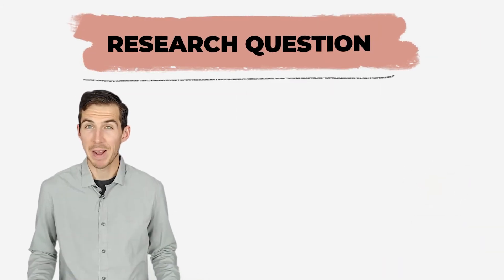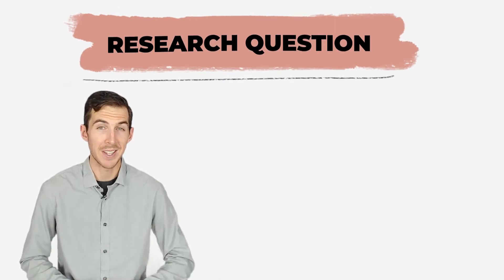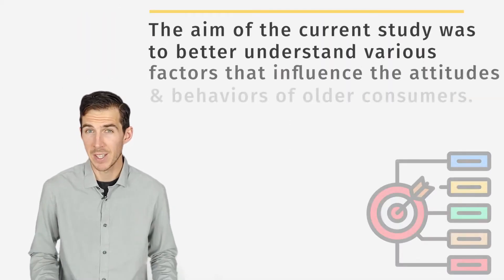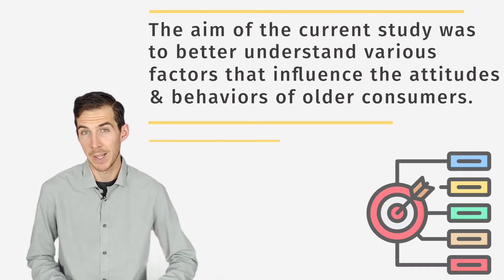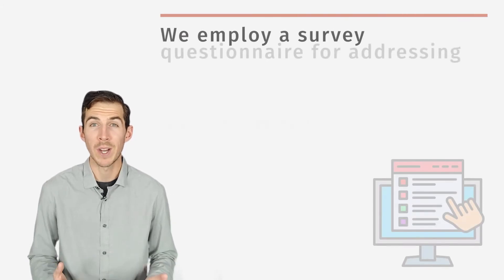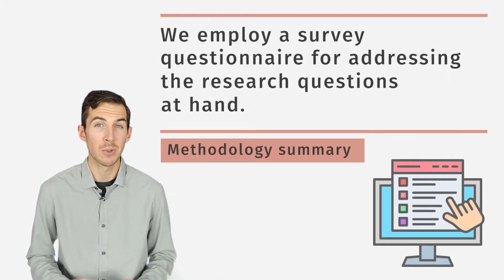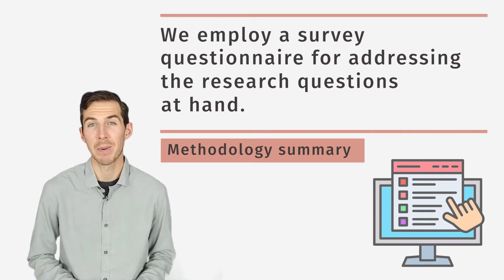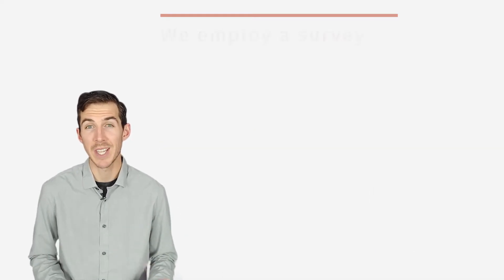Let's talk about research objectives. You have to describe what you intend to accomplish in your research. The aim of the study is to better understand the consumer attitudes and behavior of the older population. We will find this out by using a questionnaire survey. This concludes the introduction section of the research paper, and let's move on to materials and methods.